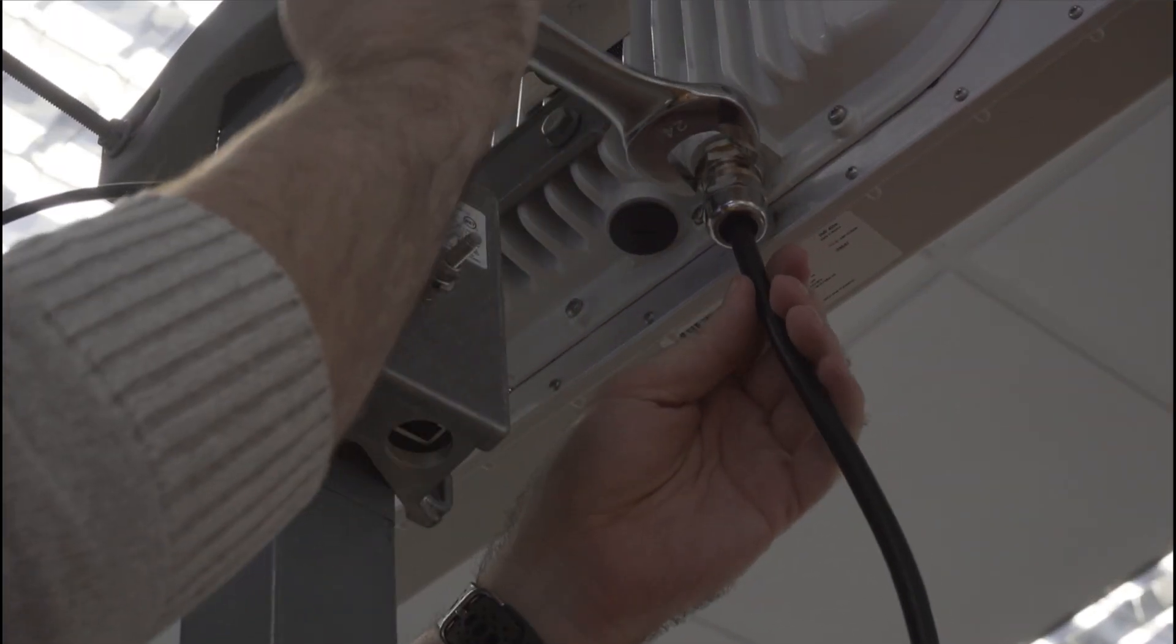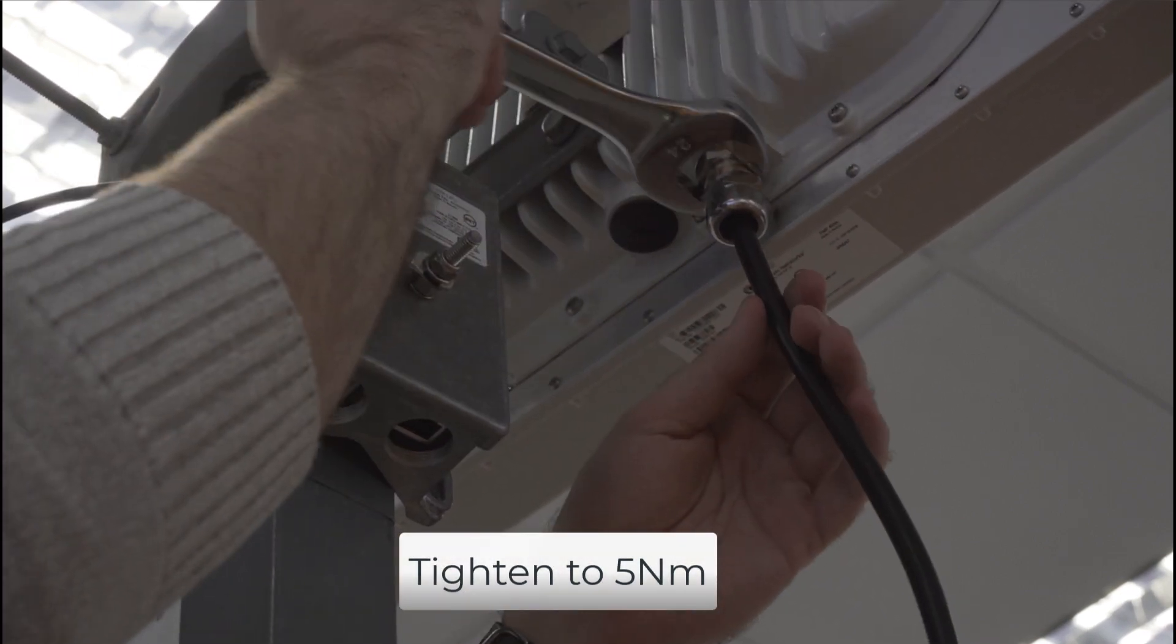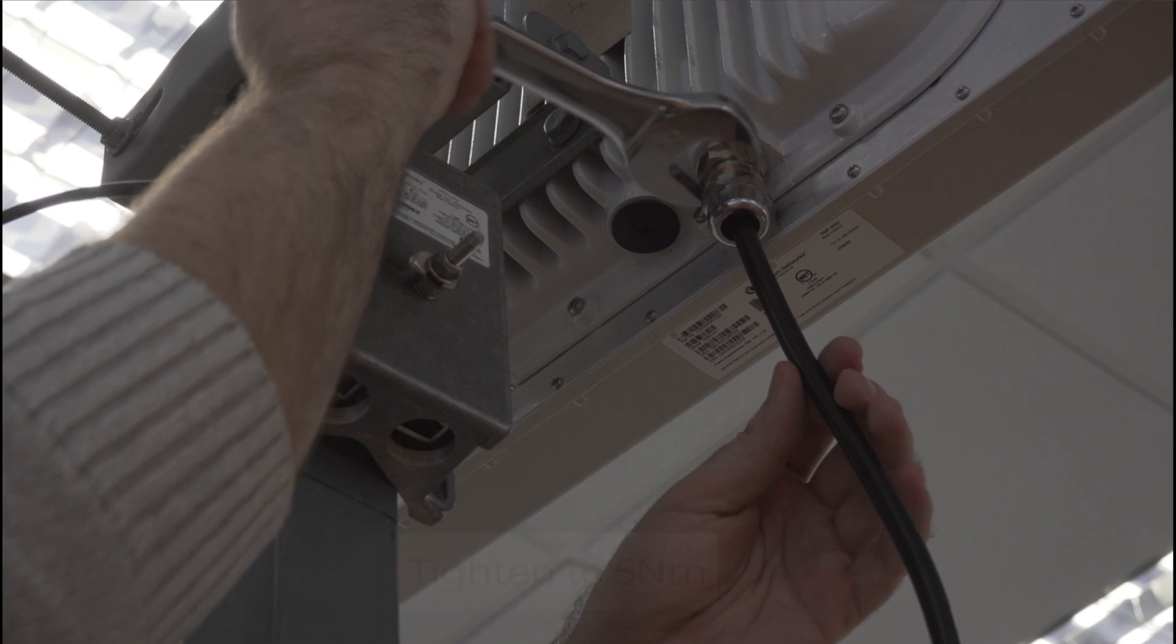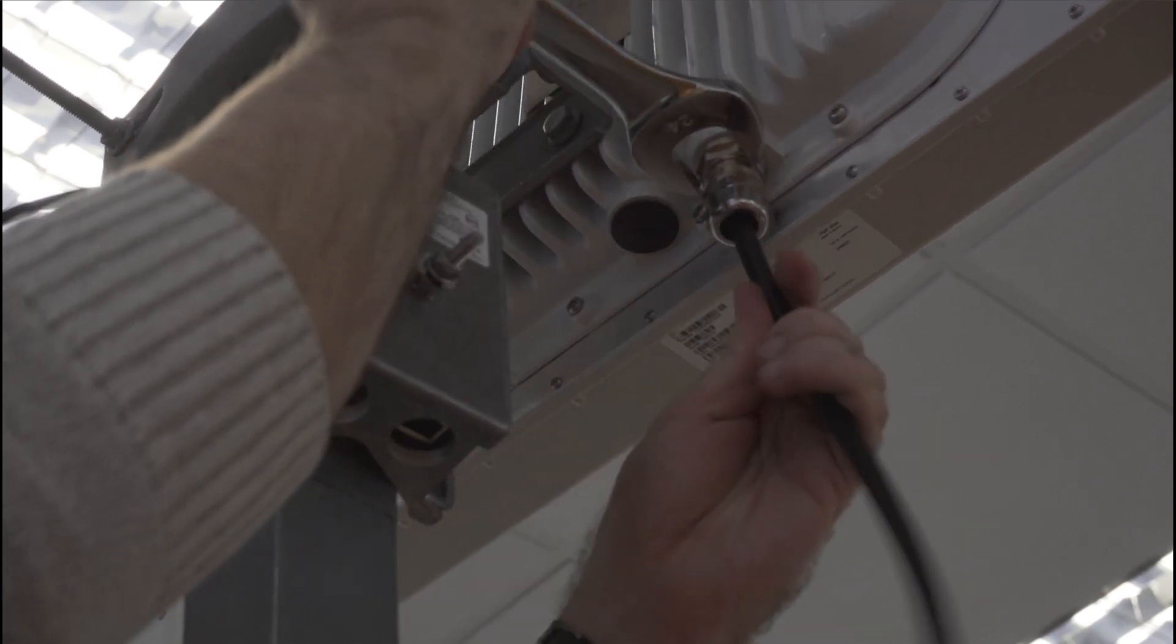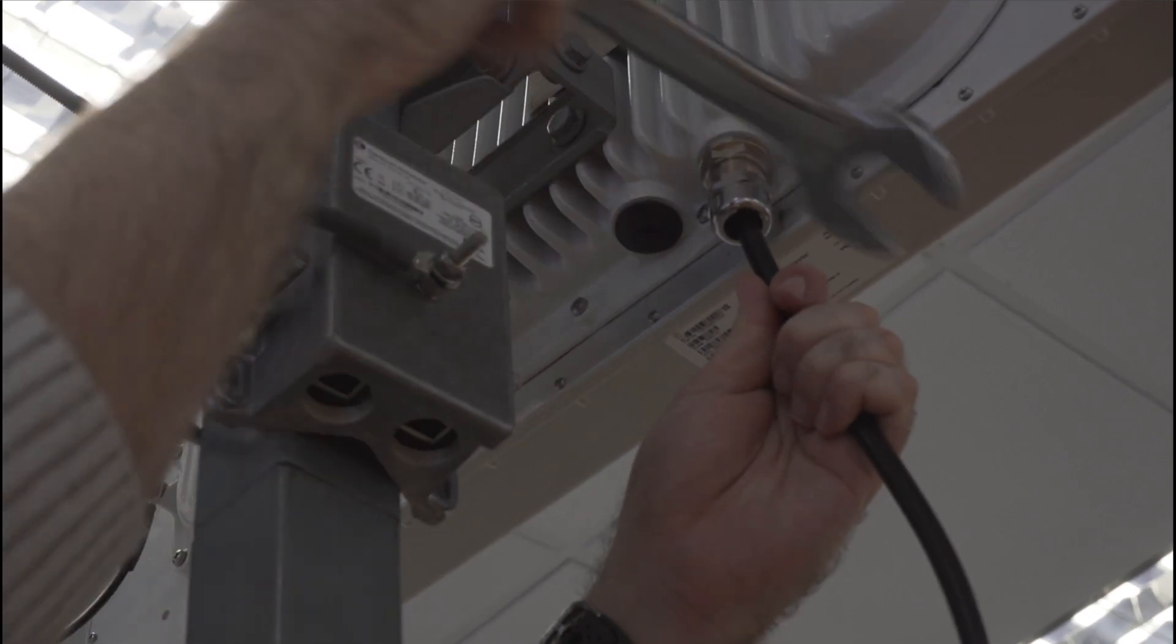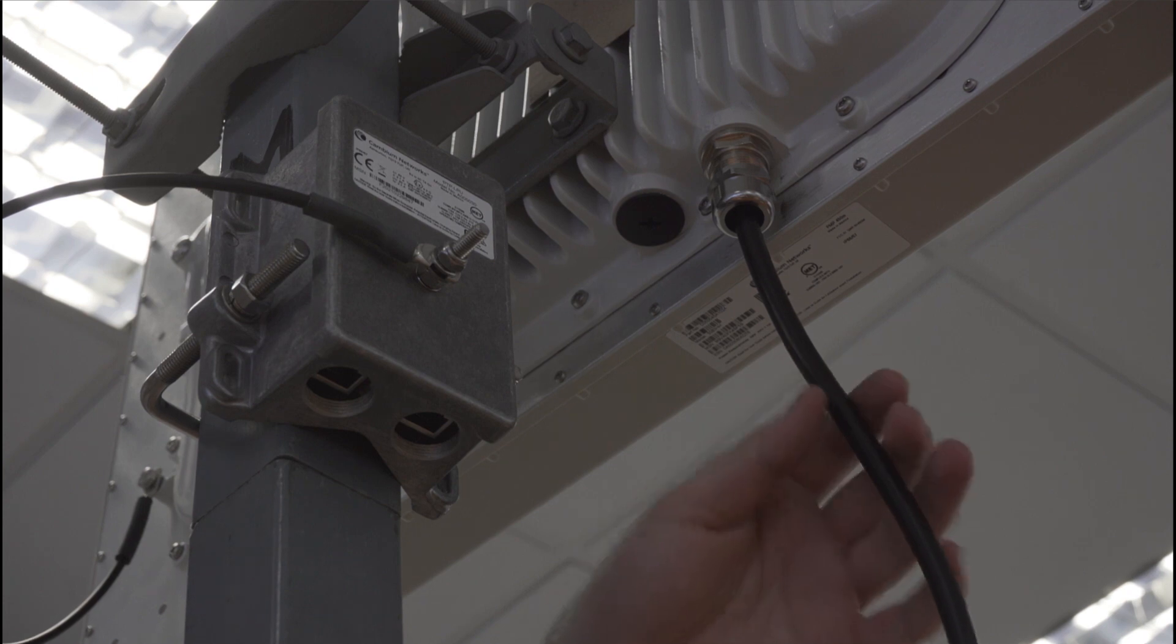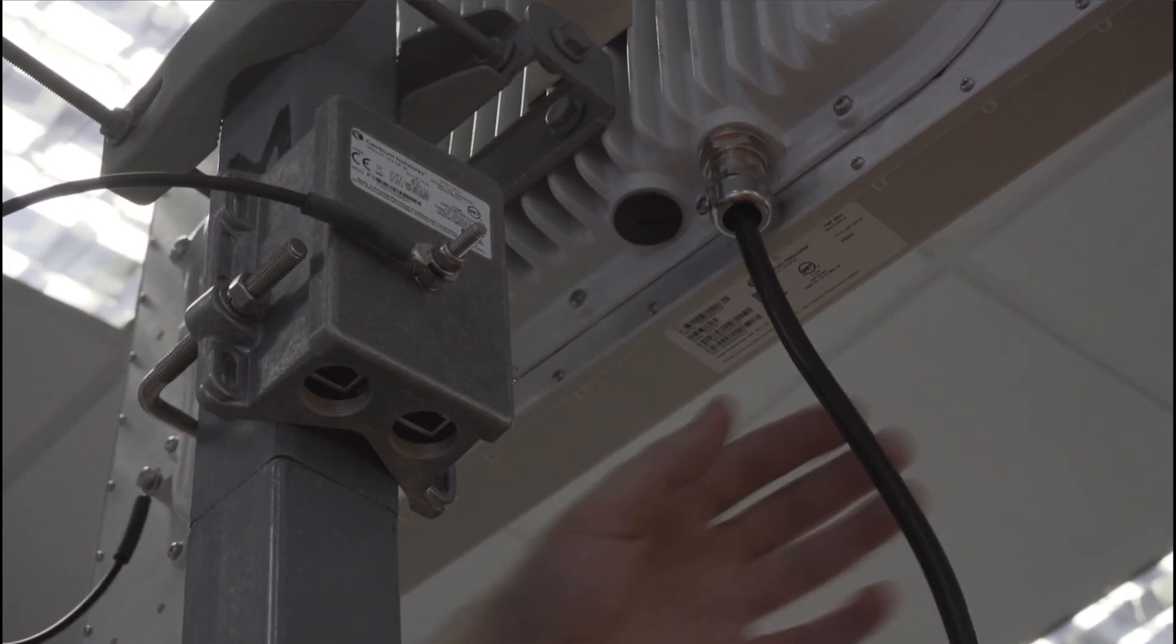The base needs to be tightened to five newton meters. Make sure to hold the drop cable while you do it so that it doesn't twist. At five newton meters, that creates one part of the weather tight seal.